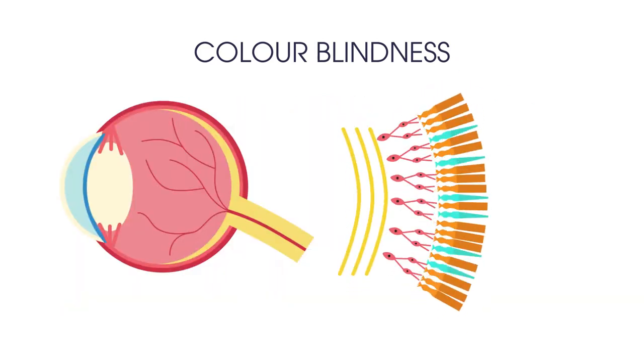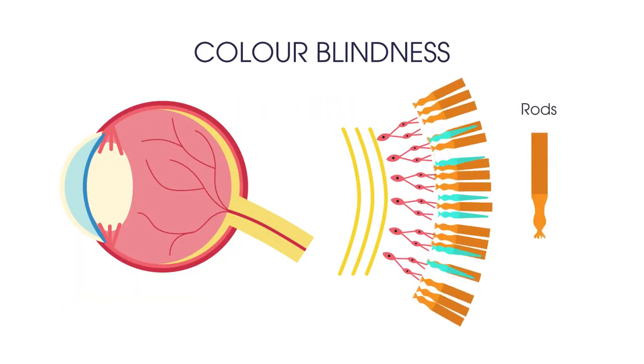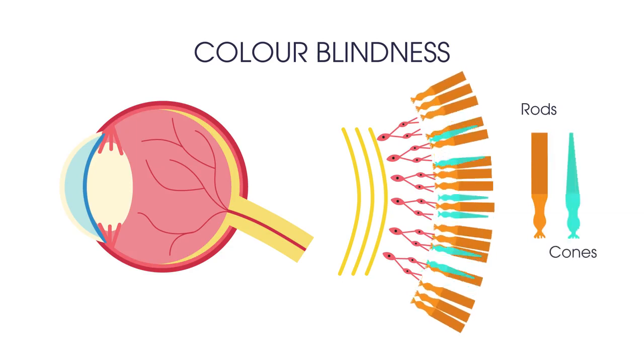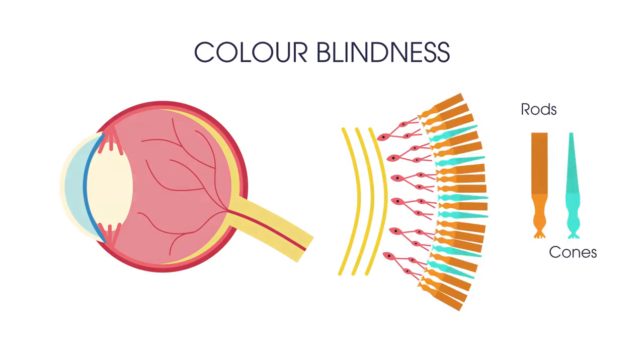The receptor cells in the retina of your eye are called rods and cones. Rods detect light intensity and cones detect colors. Rod cells are used when there is little light and cone cells help you see colors.